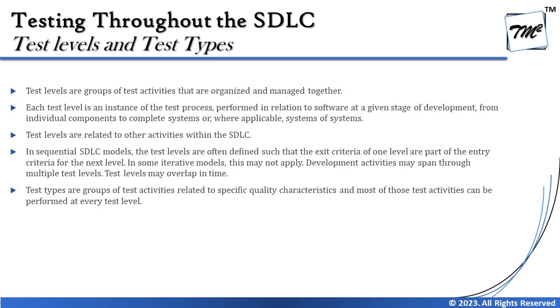Test types are groups of test activities related to specific quality characteristics, and most of those activities can be performed at every test level. Test types are different approaches that are global and can be applied to any test level at any point during testing. Under test types we talk about functional, non-functional, black box, white box, retesting, and regression testing — none of these are particular to one test level; they can be applied to any level.